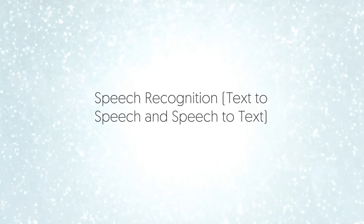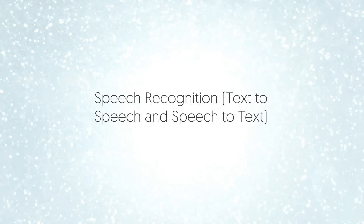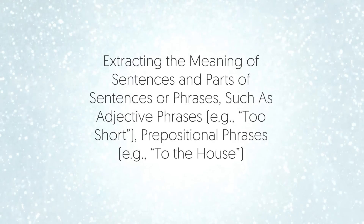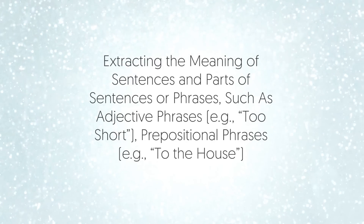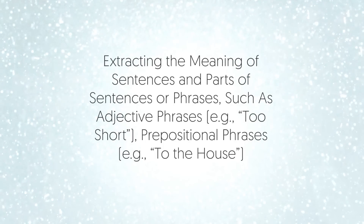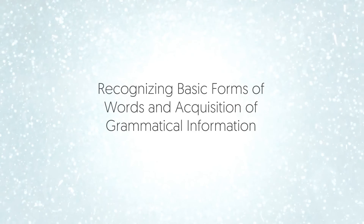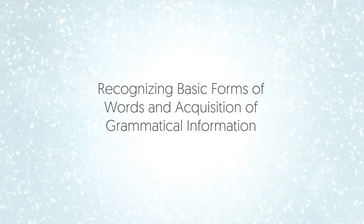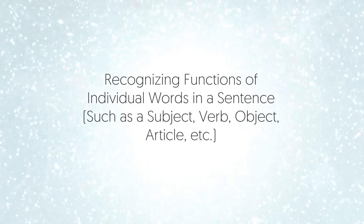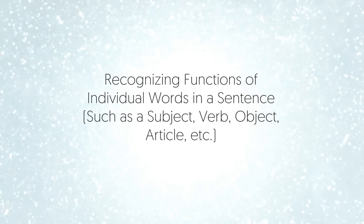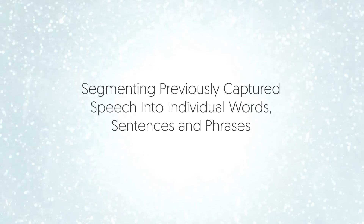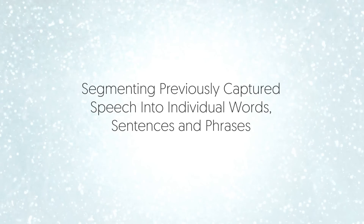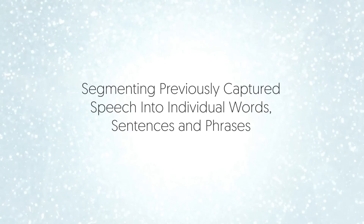You first have speech recognition, text-to-speech and speech-to-text. Then you have extracting the meaning of sentences and parts of sentences or phrases, such as adjectives like 'too short' or prepositional phrases like 'to the house.' Then you have recognizing basic forms of words and acquisition of grammatical information. Then you have recognizing functions of individual words in a sentence, such as a subject, a verb, objective, or even an article. Then you have segmenting previously captured speech into individual words, sentences, and phrases.